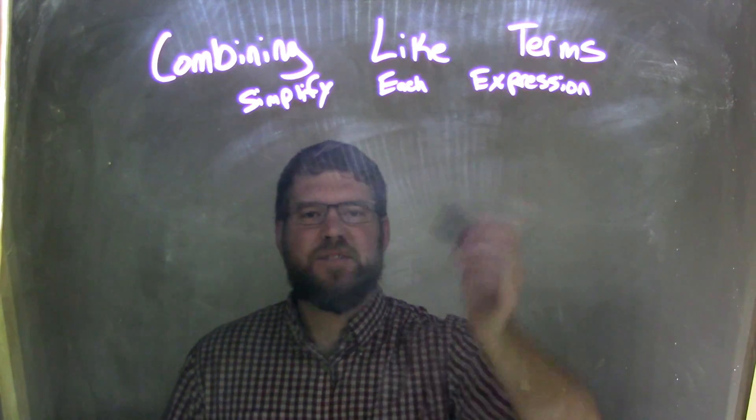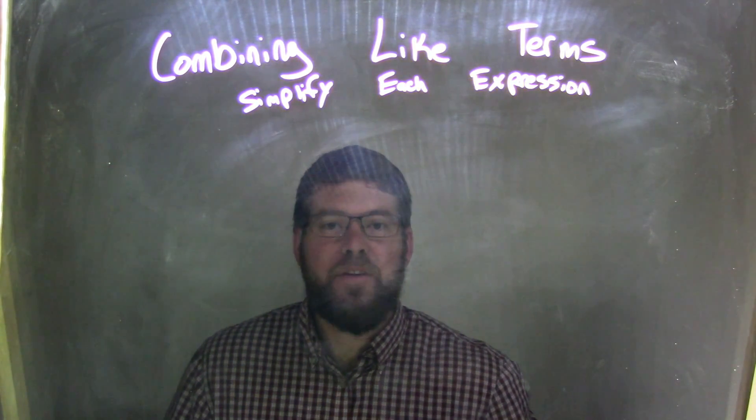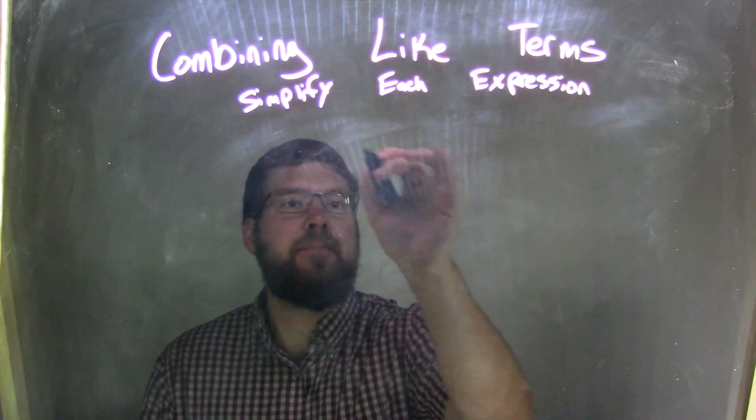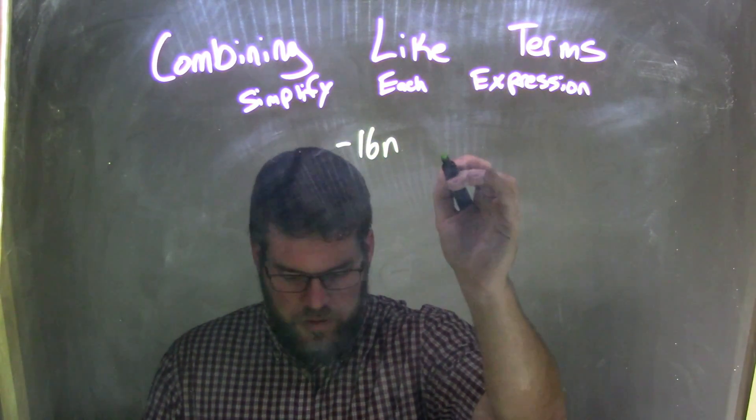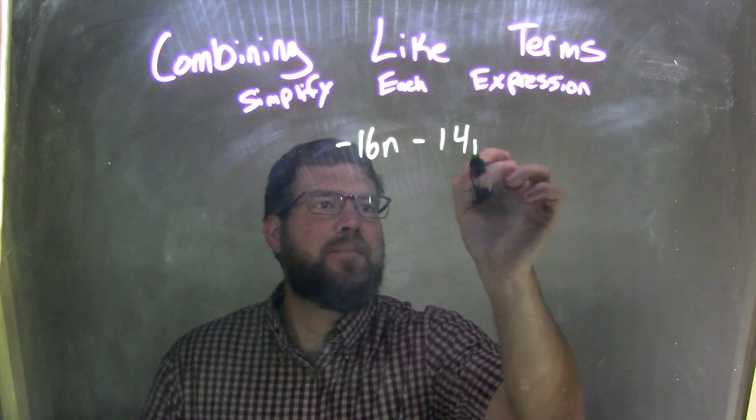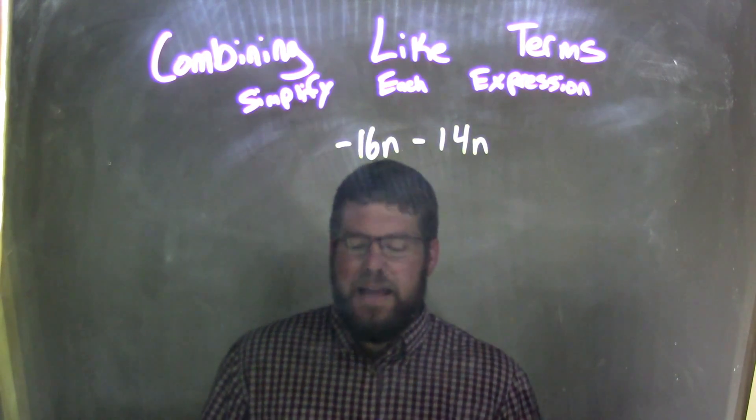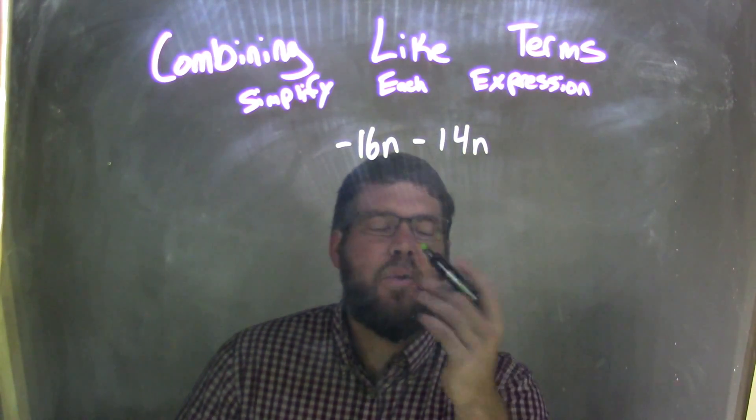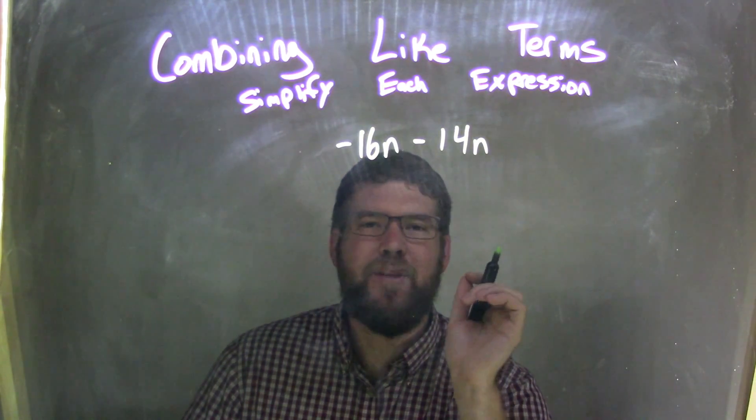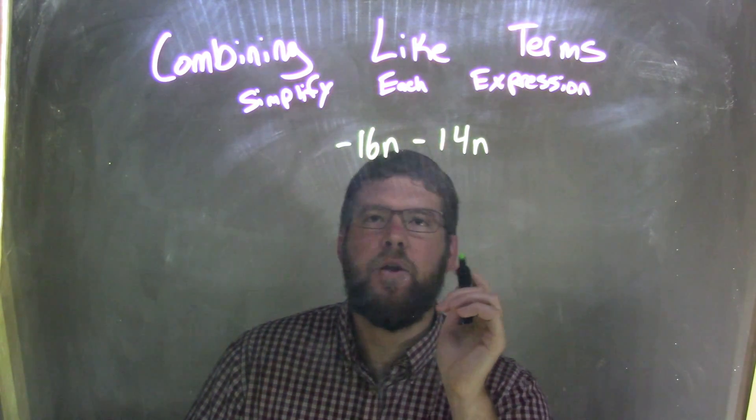I want to simplify each expression. If I was given this expression, negative 16n minus 14n. Well, these are just my only like terms, so I know I can combine them. They both have the variable n behind the coefficient.